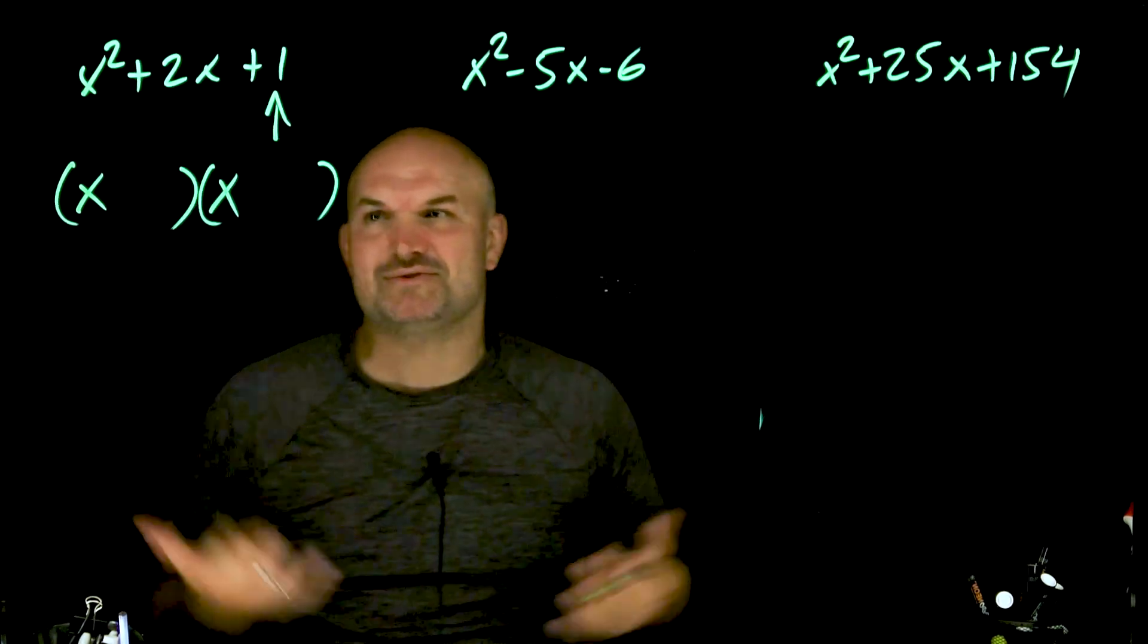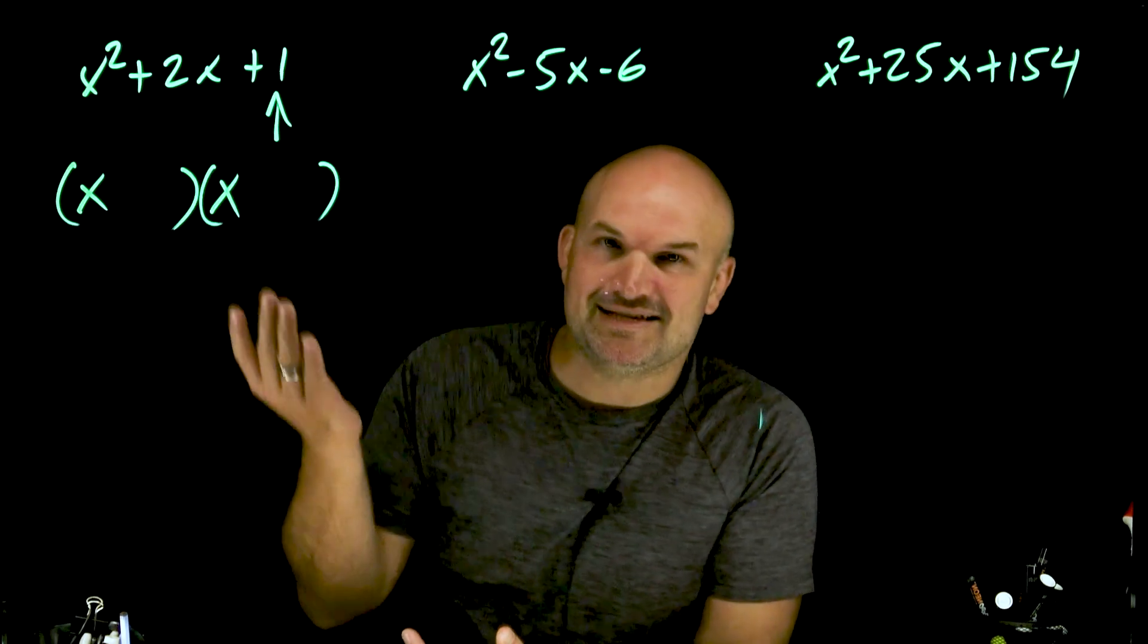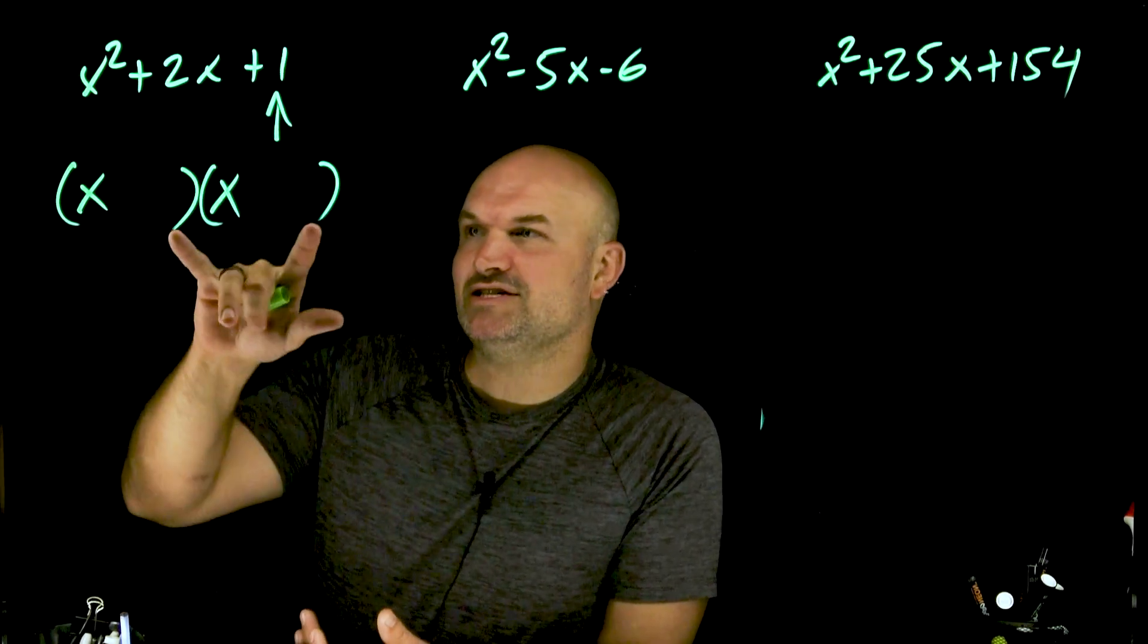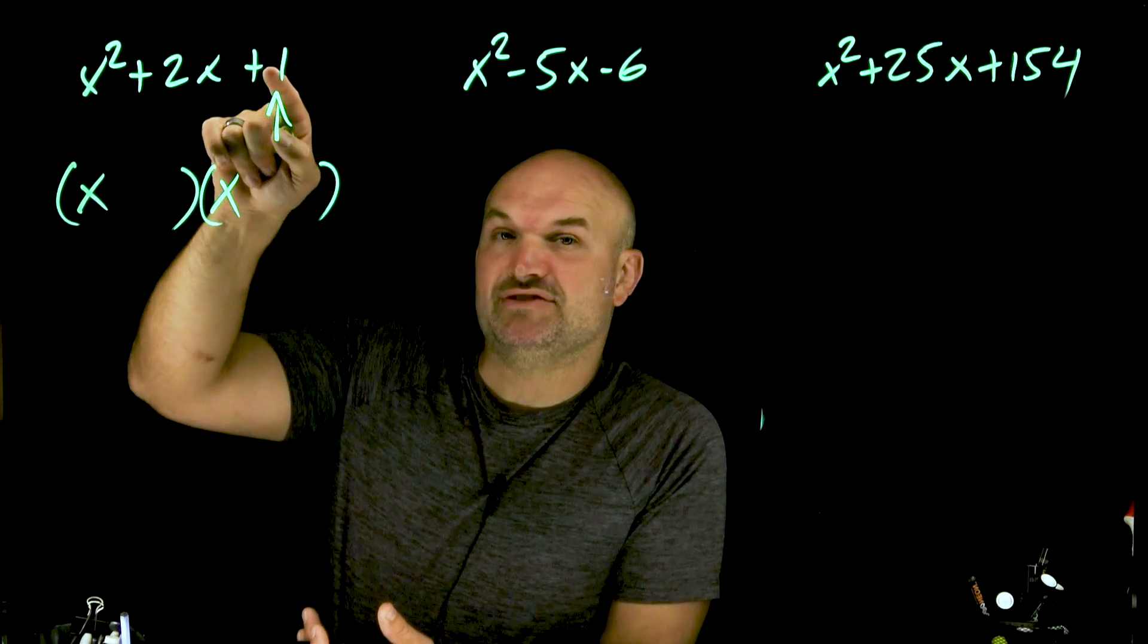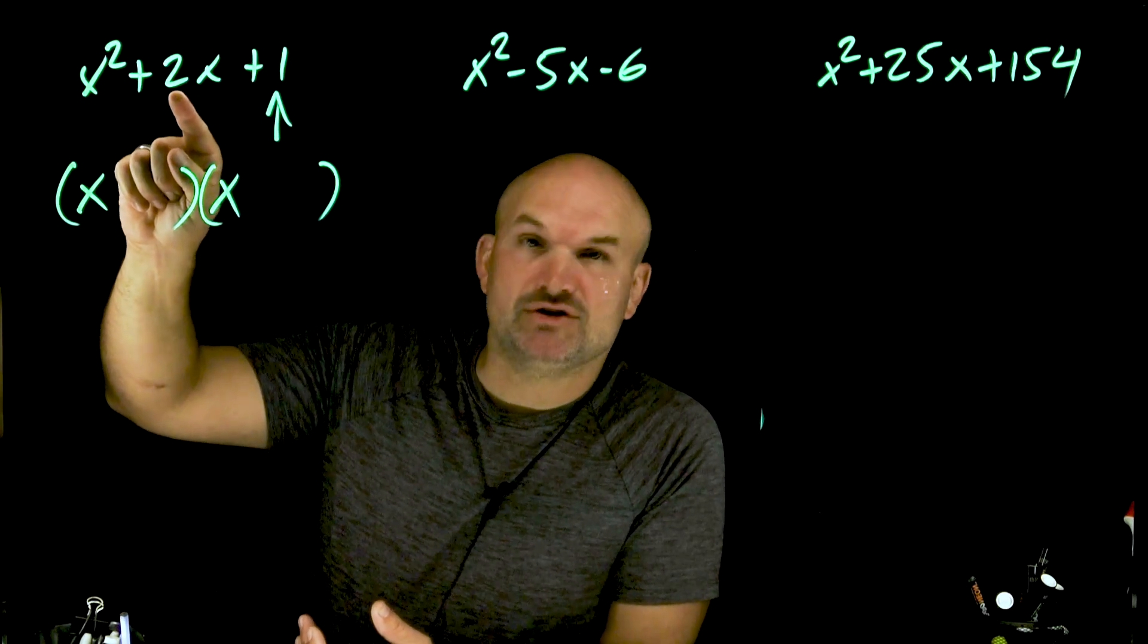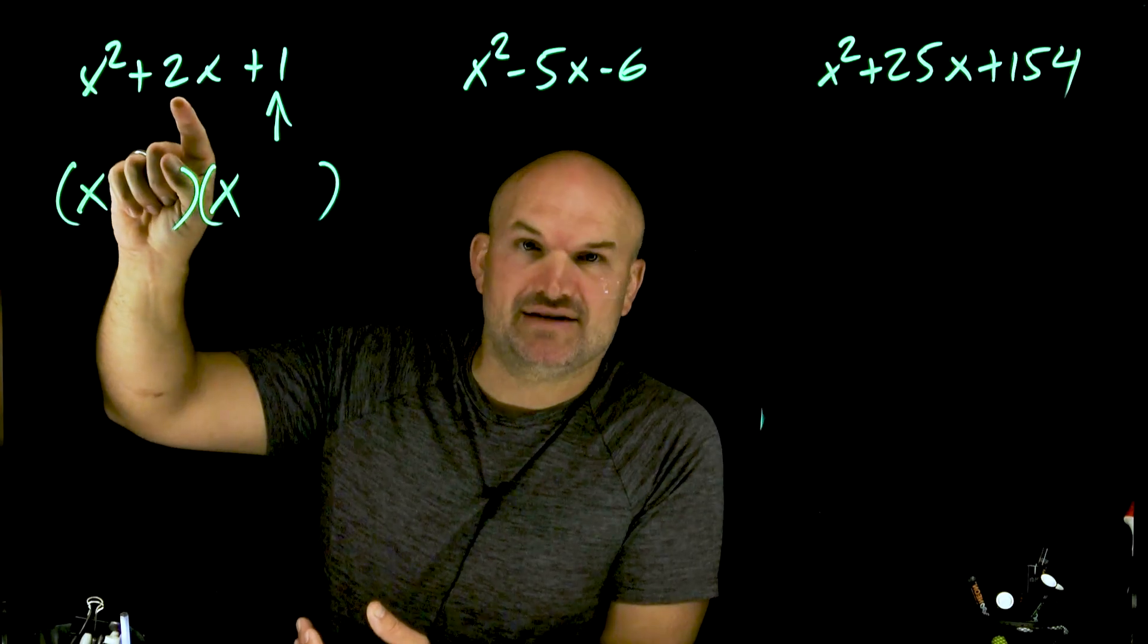But we're smarter than that. When we identify the factoring, we're not just looking for what two numbers multiply to give us our last term, but which two numbers add to give us this middle term, which in this case is going to be a positive 2.